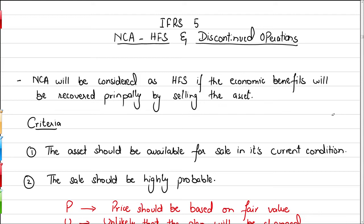This video is based on the accounting standard for non-current assets held for sale and discontinued operations. The standard covers non-current assets that will no longer be used within the organization and whose economic benefits will primarily be recovered by selling them. These types of non-current assets will be considered as non-current assets held for sale.